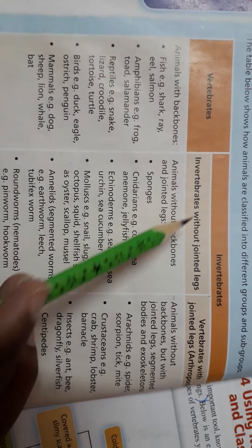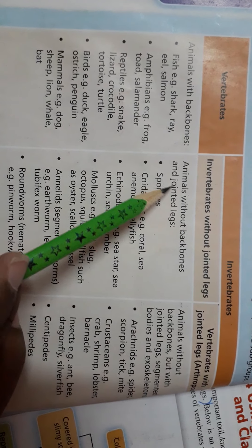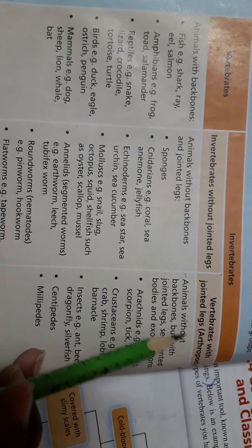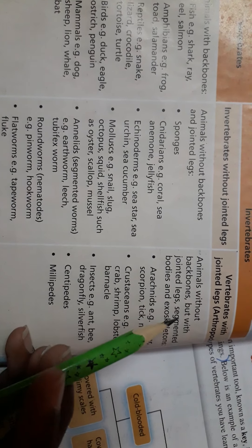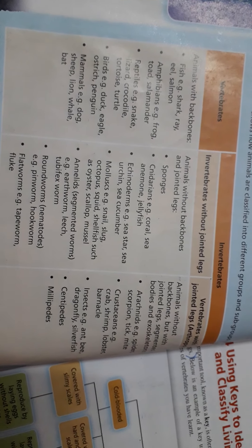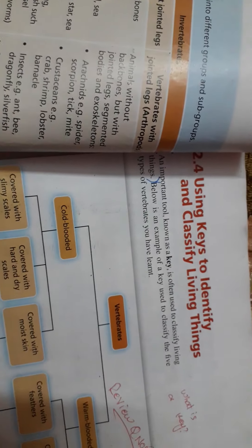Invertebrates are further divided into two groups: without jointed legs and with jointed legs. Without jointed legs are very simple organisms with simple bodies and no true organs — examples are sponges, cnidarians, echinoderms, mollusks, annelids, roundworms, and flatworms. Invertebrates with jointed legs are called arthropods; their body is segmented and their legs are jointed. Examples include crustaceans, insects, centipedes, and millipedes.